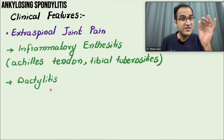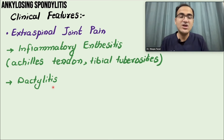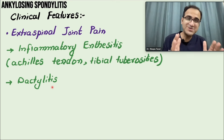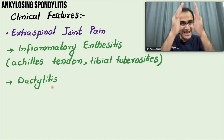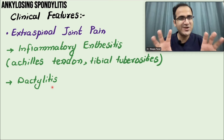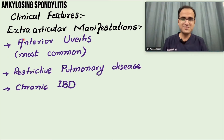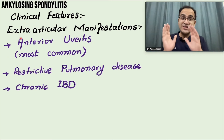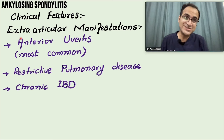Dactylitis - pain and inflammation of the fingers - can also be seen in ankylosing spondylitis, but it mainly involves the axial skeleton: the spine and sacroiliac joints.